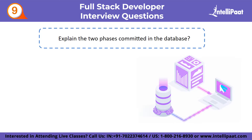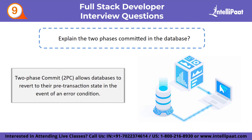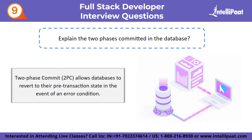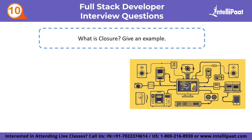Ninth intermediate question: what are the two-phase commit in the database? The two-phase commit (2PC) is a feature of transaction processing systems that allows databases to revert to their pre-transaction state in the event of an error condition. The two-phase commit strategy ensures that either all or none of the databases are updated, so the databases remain in sync.